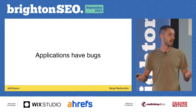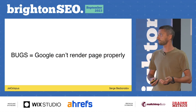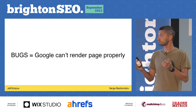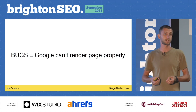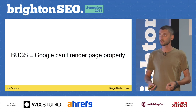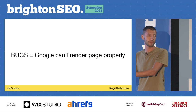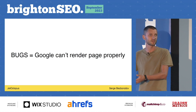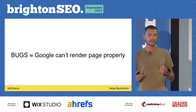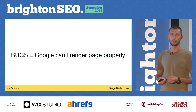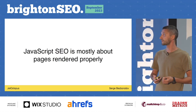What does that mean — bugs — for SEOs? Bugs mean, in most cases, Google can't render your page properly. In the old school way, you already have a page. But now it should be rendered, and JavaScript bugs can make things a lot harder for that.